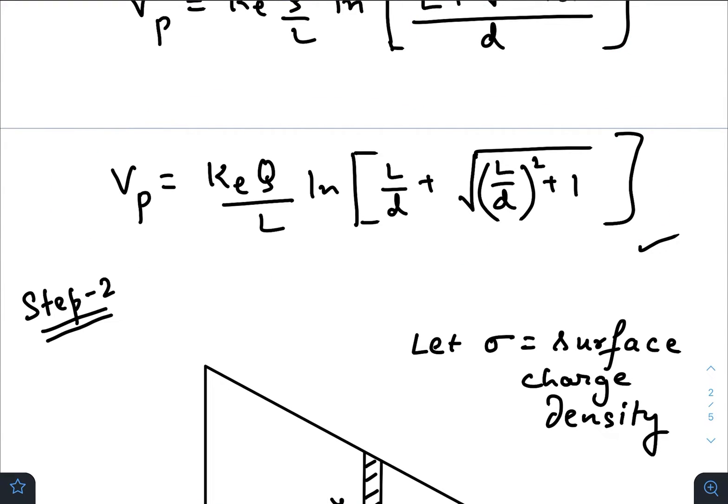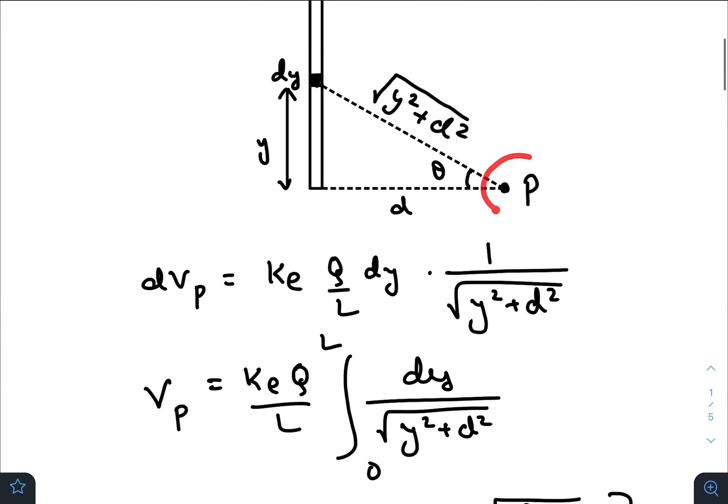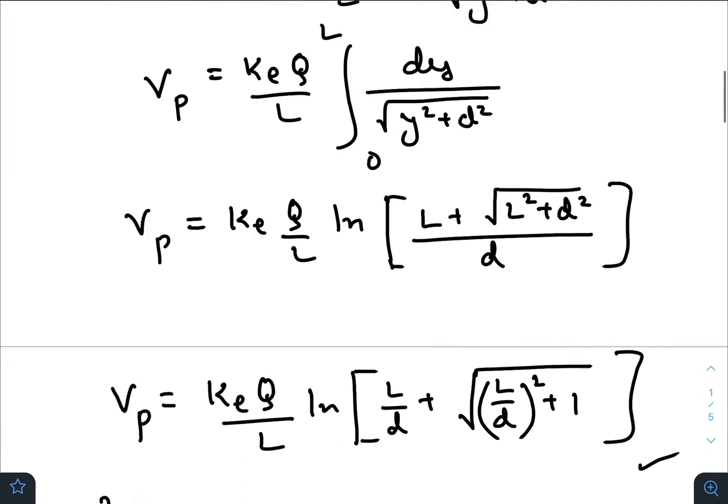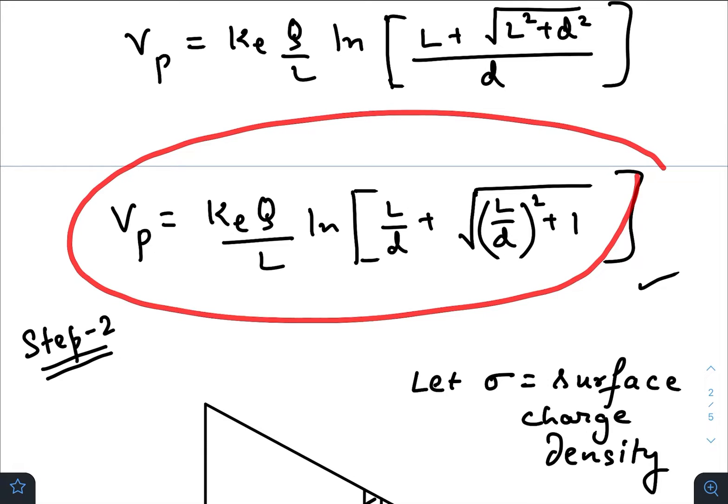So this is the potential at this point due to a rod of charge Q, length L. We will use this final result in our video.